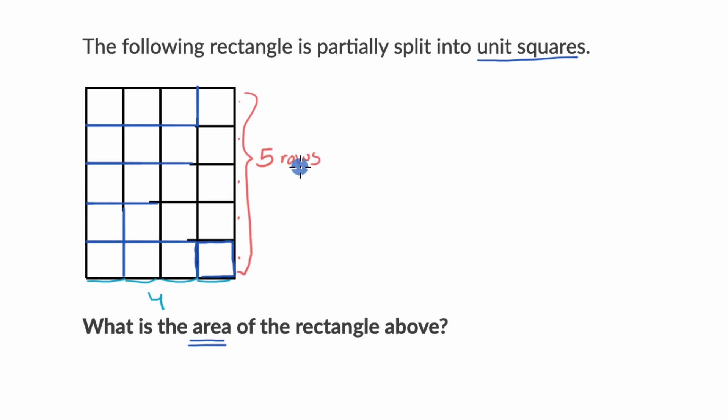So you could view it as we have five rows of four. So how many total of these unit squares exactly cover this rectangle? Well, we could just count them. We could see that that is going to be, well, it's going to be five rows of four.